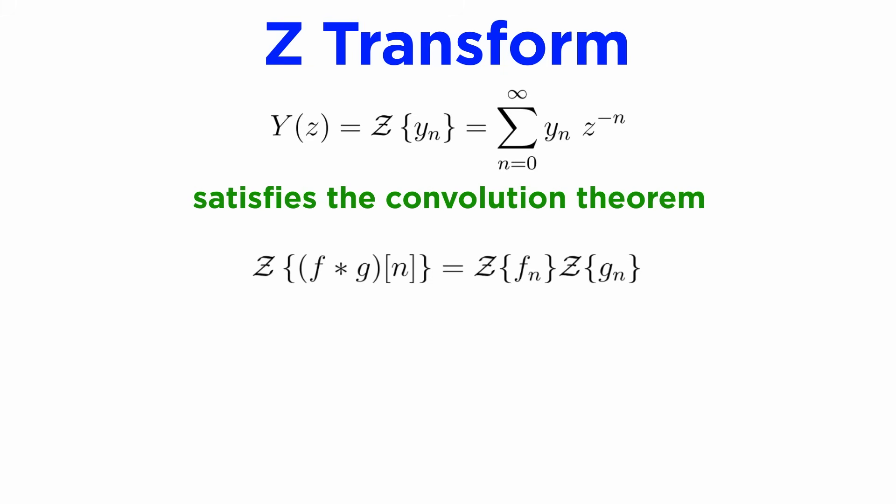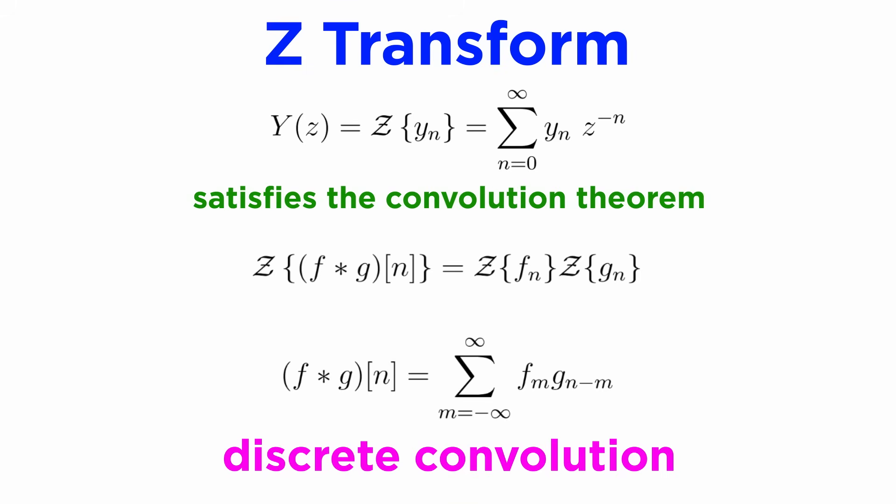The z-transform also satisfies the convolution theorem, meaning that the z-transform of a convolution is equal to the product of the individual z-transforms, although this time the convolution operator must be defined as a sum rather than an integral. While the precise definition and terminology varies a bit by what it's being used for, the most widely applicable definition is that the discrete convolution of two sequences f sub n and g sub n is the sum from negative infinity to infinity of f sub m times g sub n minus m, where m is a dummy index serving the same purpose as tau from the continuous convolution.